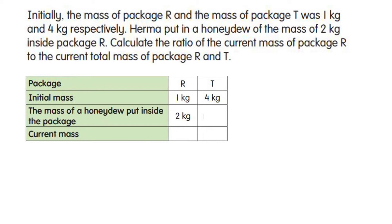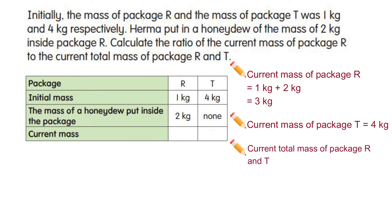And package T, none. Now the current mass of R, one kilogram plus two kilograms, will be three kilograms, and T will remain four kilograms. First, find the total mass of package R and T.